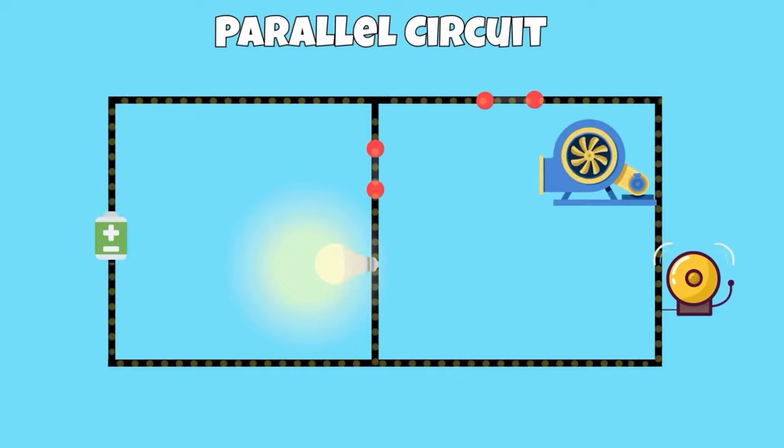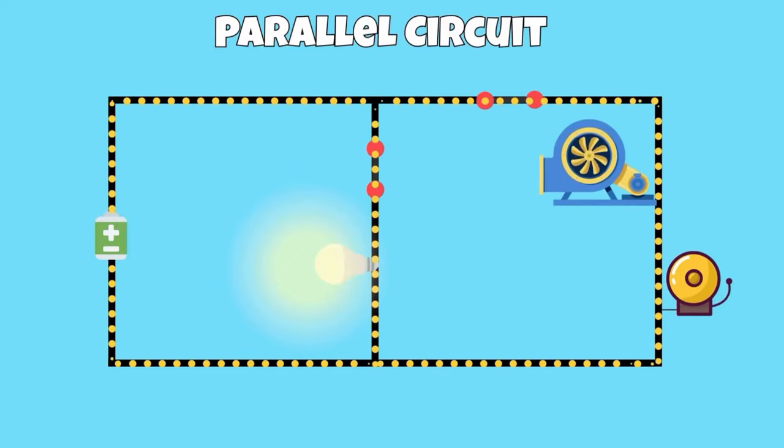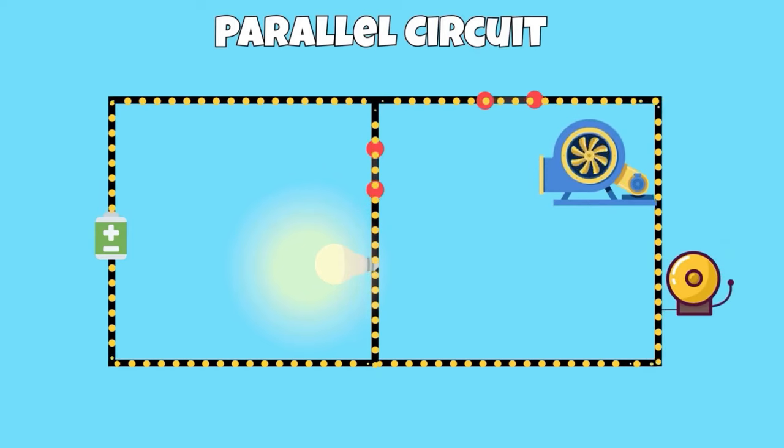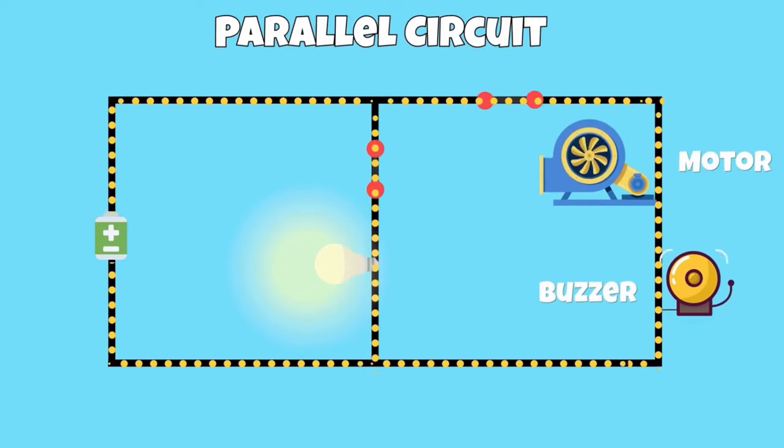In this example, we have a parallel circuit with multiple switches. As we can see, electricity is flowing through multiple paths, powering the motor, buzzer, and the light bulb.